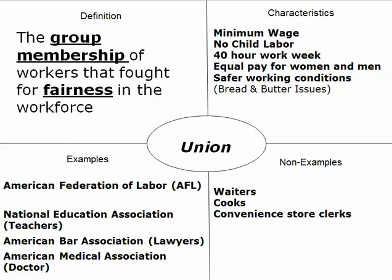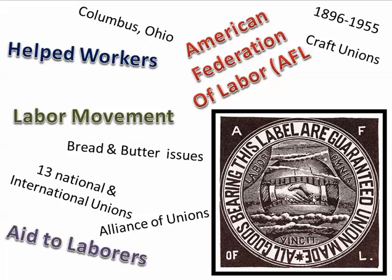The American Federation of Labor existed from 1886 to 1955, when it was merged with the Congress of Industrial Organizations, or CIO, to form the AFL-CIO. The AFL consisted of craft unions — 13 national and international unions that joined together. It began a labor movement helping workers and giving aid to laborers.